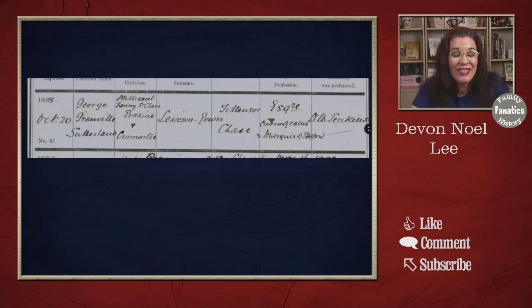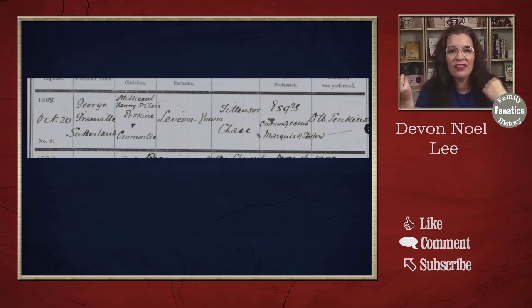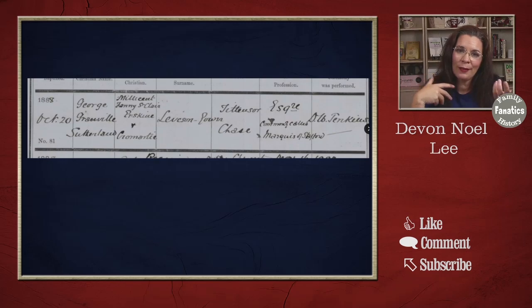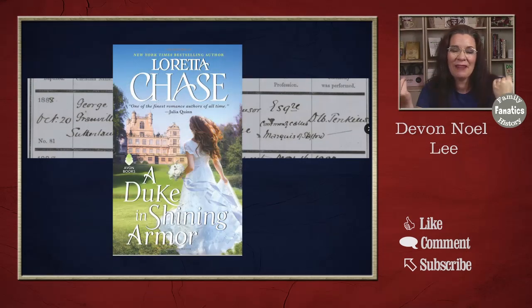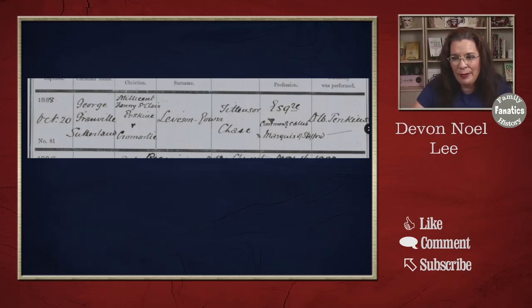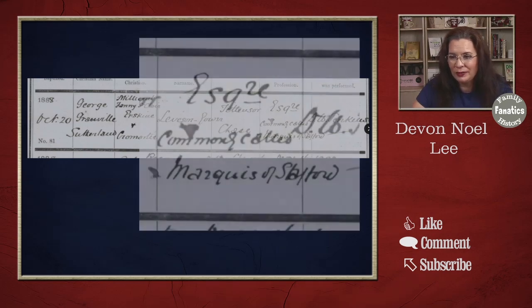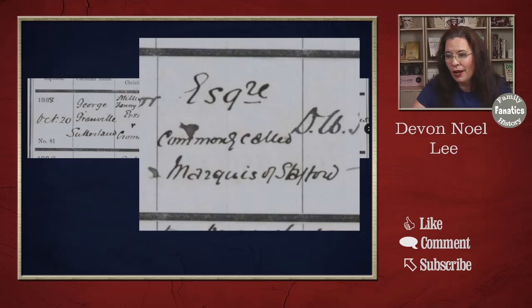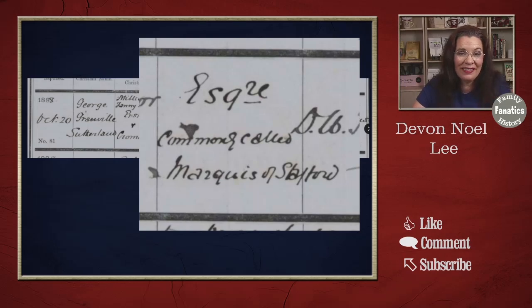You'll also be able to see who performed the ceremony — it's kind of nice to add historical context. One of the things I really like is that you have the aristocrats and the non-aristocrats showing up in the same records. If you've read historical fiction like Poldark, you know they try to keep themselves separated in real life, but in these documents they're all on the same page. Here is the baptism for George Franville Sutherland, and the dad's occupation is listed as Esquire, commonly called the Marquis of Stafford.